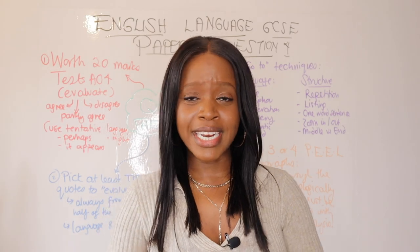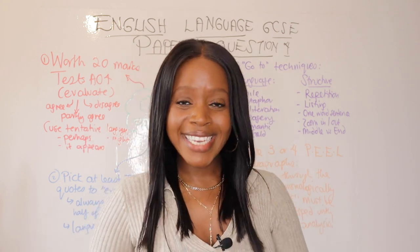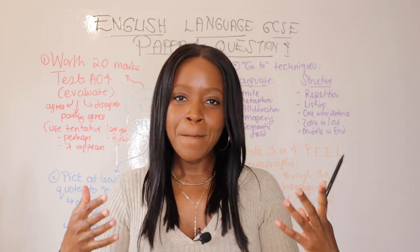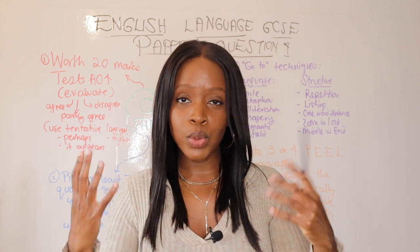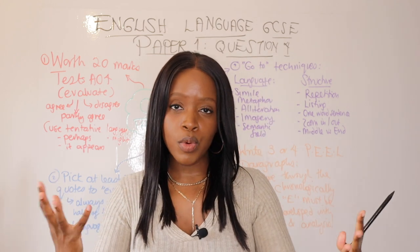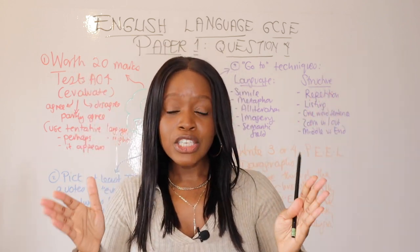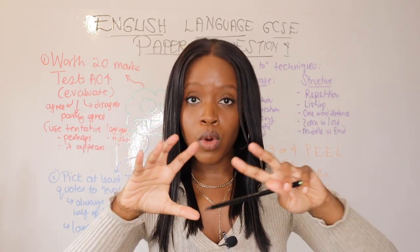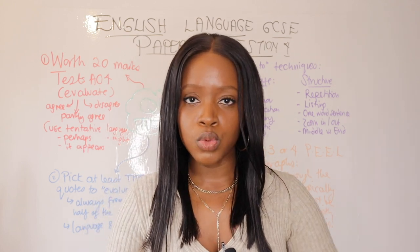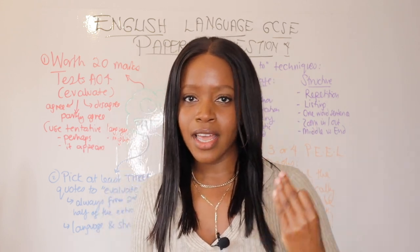Hello and welcome back to yet another GCSE revision lesson. One of the common complaints I get from a lot of you who watch my videos is that some of my videos are a little bit too long. It's all well and good knowing how to pass language paper one, but going over a question in 20-plus minutes is too long. So I've listened to the feedback, and in this video I want to give you a summary of question four in language paper one within five minutes — the four steps you should take when approaching this question.